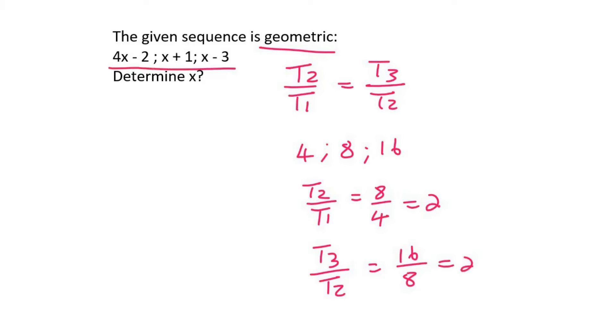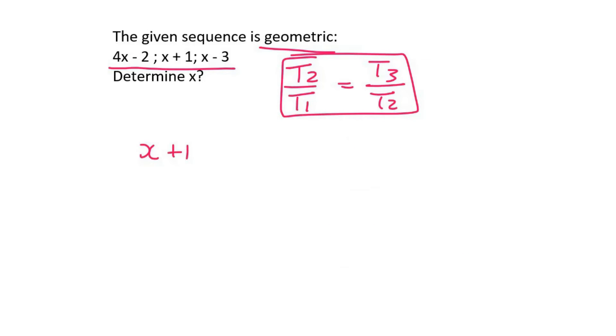So when they give you a question like this, all you do is you write this out, and then you just fill everything in. So it's x plus 1 over 4x minus 2 equals to x minus 3 over x plus 1.